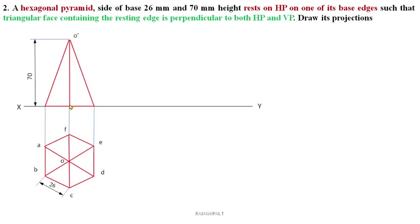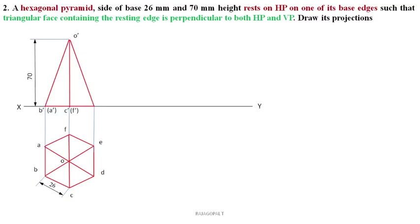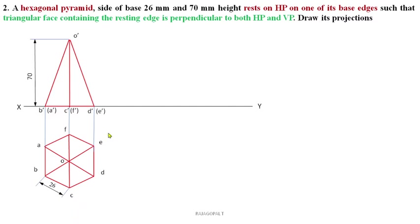Since it is visible, we can complete the front view. This is O'. B, C, D are visible to an observer from the front; A and E are invisible. So B' is visible, A' is invisible, C' is visible, F is invisible (denoted in brackets). D is visible, E is invisible. D' and E' complete the final simple position of the hexagonal pyramid.